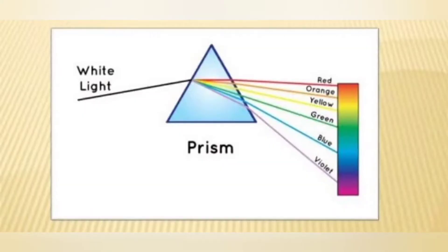We can see here that when white light passes through a prism, it converts into seven colors: red, orange, yellow, green, blue, and violet.